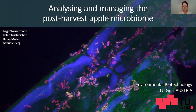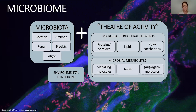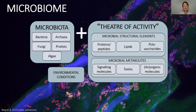First, a short introduction into the microbiome. The microbiome consists of all the microbiota present in a defined system — this can be bacteria, archaea, fungi, protists, and algae. But it's not only the microbiota that are present; it also includes their so-called theater of activity, which encompasses all microbial structural elements like proteins, lipids, and polysaccharides, as well as microbial metabolites like signaling molecules.